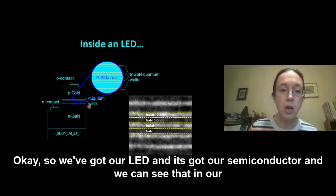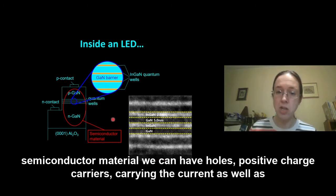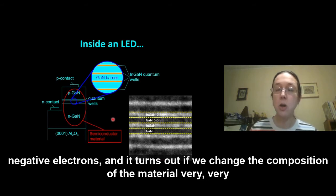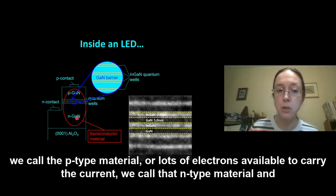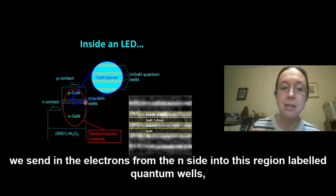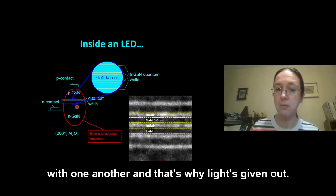Okay, so we've got our LED and it's got our semiconductor and we can see that in our semiconductor material, we can have holes, positive charge carriers carrying the current as well as negative electrons. And it turns out if we change the composition of the material very, very slightly, we can cause it to either have lots of holes, and that's what we call the P-type material, or lots of electrons available to carry the current. We call that N-type material. And we send in the electrons from the N-side into this region labelled quantum wells and the holes from the P-side. And when they meet up, they combine with one another. And that's why light's given out.